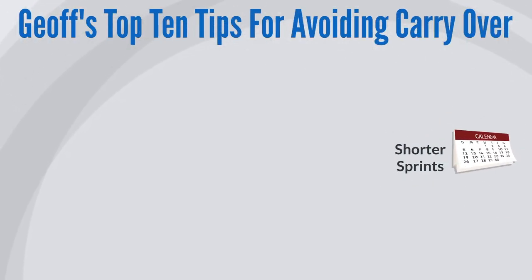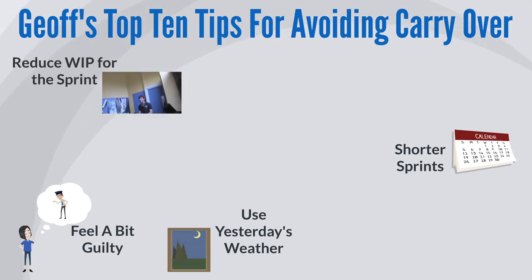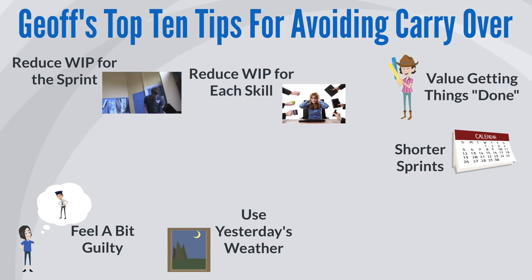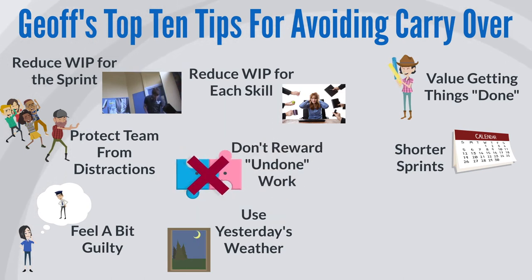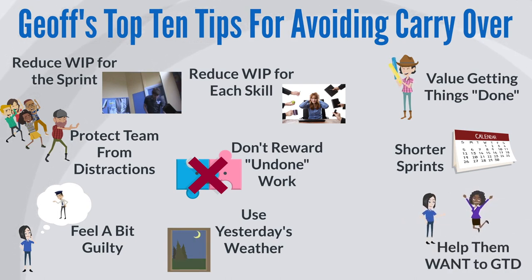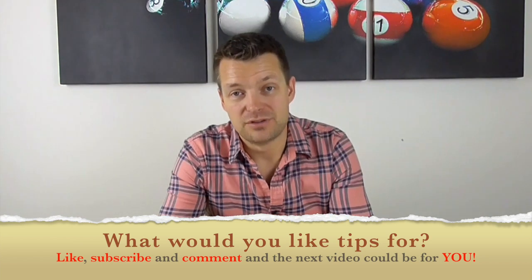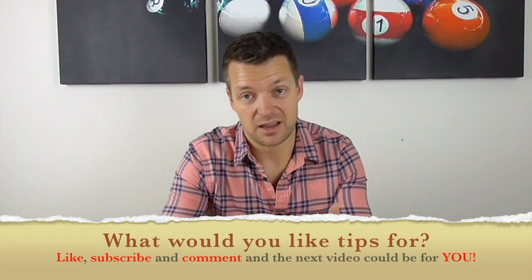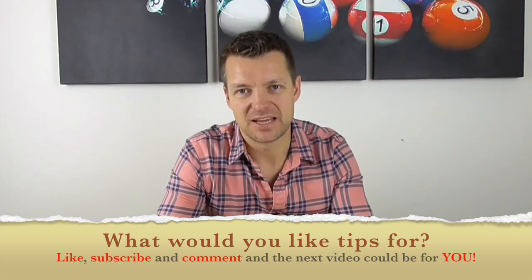So that's my top 10 tips. A quick recap: use shorter sprints, use yesterday's weather, feel a bit guilty about not getting things done, reduce work in process for the sprint, reduce work in process for each stage in the sprint and swarm, value getting things done, protect the team from distractions, don't allow undone work to be demonstrated in the sprint review, help the team want to get things done, and ask each team member what's worked for them in the past. I hope that video was useful, especially for Master Carpenter. Like the video, subscribe, add something in the comments, and until next time — take care, have a great day, bye!